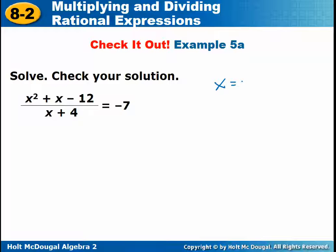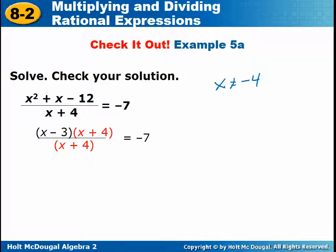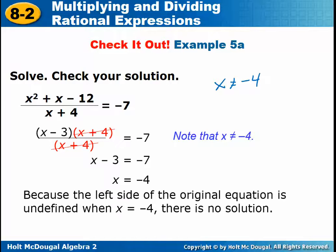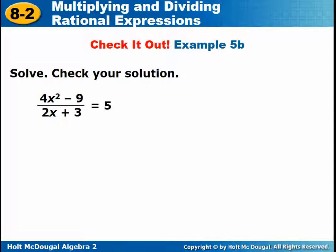In this one, X cannot equal negative 4 because that gives 0 in the denominator. Factor the top, cancel common factors, then solve. If you get the answer X equals negative 4 and we already said X cannot equal negative 4, then there's no solution. You will get a few on your worksheet that are like that.